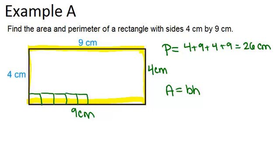So in this case, our area will just be 4 times 9 or 36 cm squared.